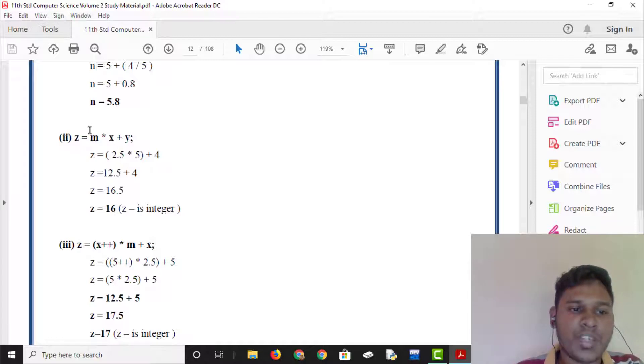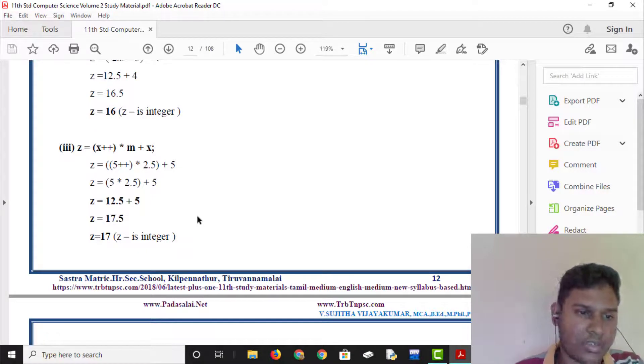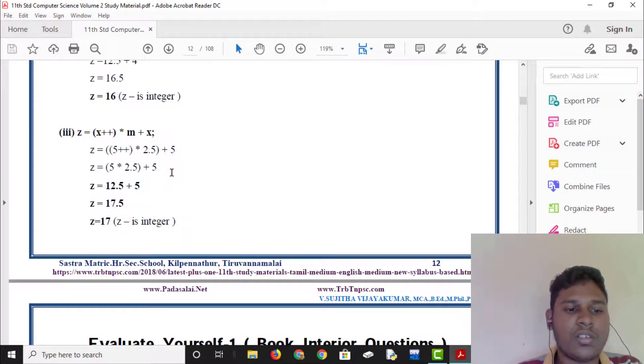z is equal to m star x plus y. We have multiplication first. m is 2.5. If you multiply 5, you will get 12.5. 12.5 plus 4 is 16.5. z is equal to x plus plus star m plus x. x plus plus star 2.5. Now, 5 into 2.5 is 12.5. If you add 5, it will be 17.5. If you add the integer, it will be 17. If you add 17.6, it will be 18. If you add 17.4, it will be 17.